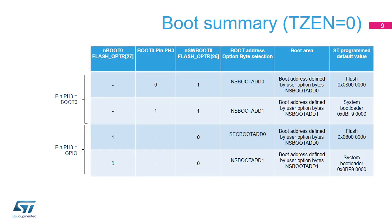This table summarizes the boot options when TrustZone is disabled. When the N SW boot 0 option bit is equal to 1, the boot address depends on the state of the boot 0 pin: either NS-boot-ADD0, pointing to the user image entry point in an internal memory, or NS-boot-ADD1, which is by default the entry point of the system bootloader. When the N SW boot 0 option bit is equal to 0, the option bit N boot 0 replaces the boot 0 pin state.